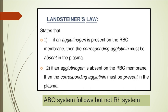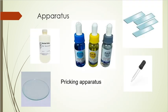The ABO system follows Landsteiner's Law - if we have A antigen we won't have A antibody, and vice versa. However, the RH system does not follow Landsteiner's Law because RH positive persons have the D antigen but RH negative persons don't have any antibodies, so they neither have the antigen nor the antibody.